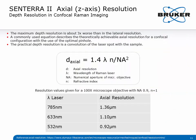We also want to talk about depth or axial resolution. It is very commonly defined as 1.4 times the incident wavelength times the refractive index divided by the square of the numerical aperture. In the table below, you can see the best possible resolution for each wavelength.